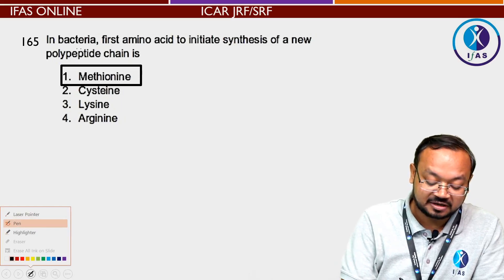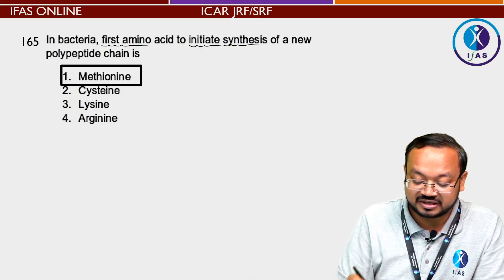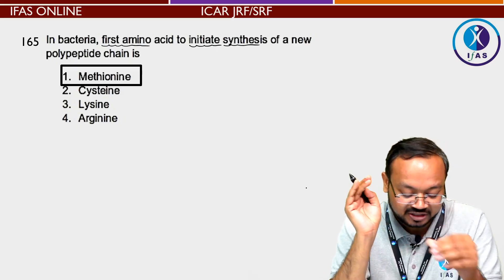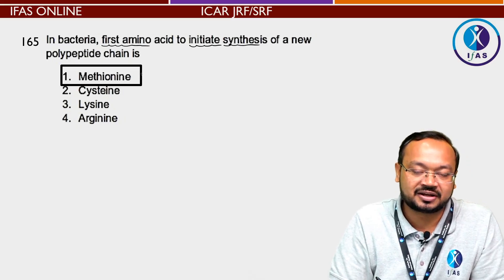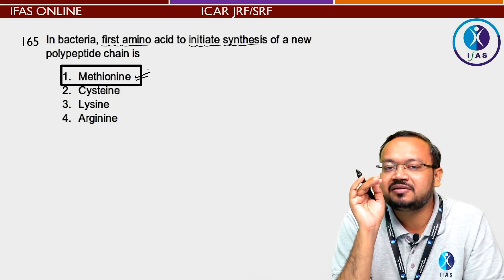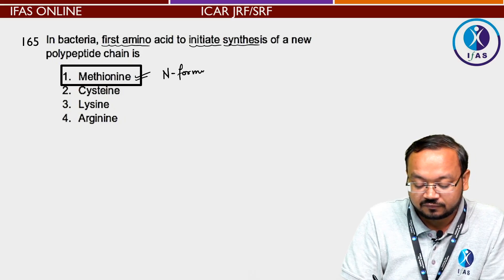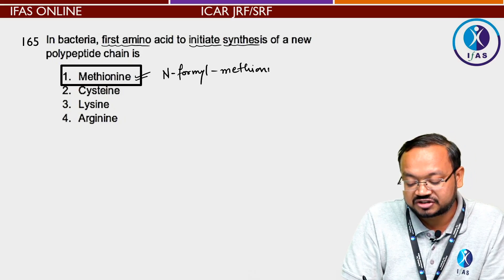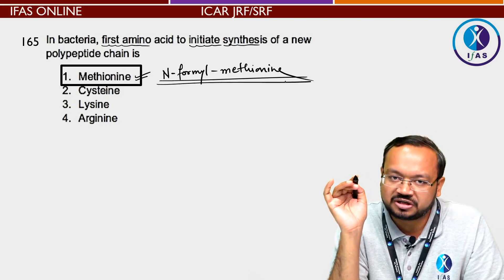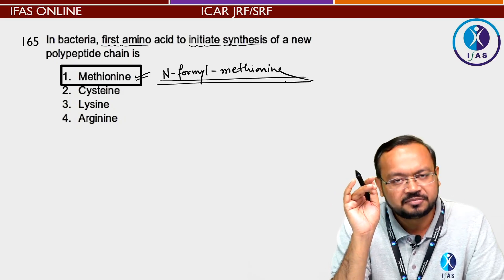Next question: In bacteria, the first amino acid at the time of translation — सबसे पहले कौन सा amino acid use होता है? According to given options answer है methionine, लेकिन अगर prokaryotic translation पता है तो जादा सही answer N-formyl methionine होना चाहिए था। अगली बार N-formyl methionine लिखा हो तो कुछ अलग नहीं है — वो जादा सही है। Methionine भी ठीक है।